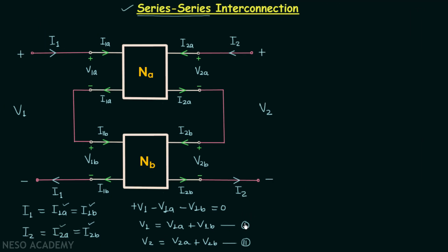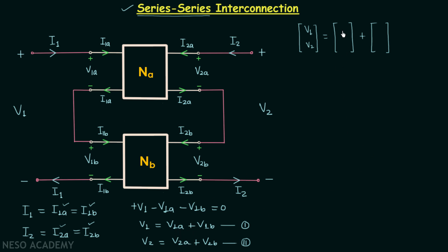From equations one and two we can write the matrix form: a 2-by-1 matrix with elements V1 and V2 equals the sum of two 2-by-1 matrices — the first having elements V1A and V2A, and the second having elements V1B and V2B.